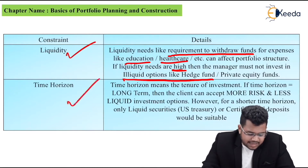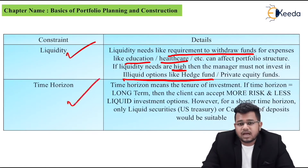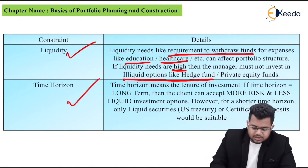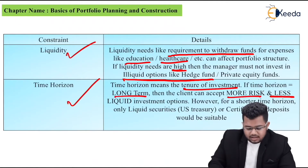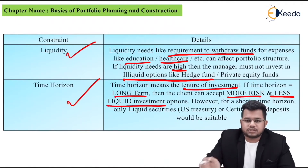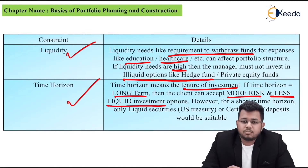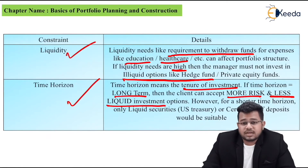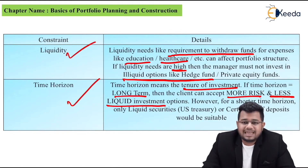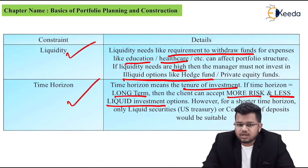The next constraint is time horizon — short term, medium term, or long term. Time horizon means the tenure of your investment. If the time horizon is long term, then the client can accept more risk and less liquid investment options. If your time horizon is very long, just like endowment and foundation funds, you can take more risk. Plus, you can also invest in illiquid investments like real estate, hedge funds, and private equity.